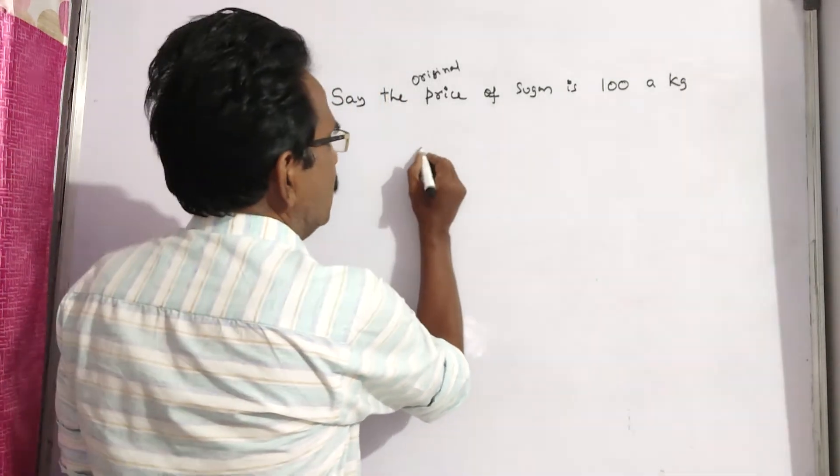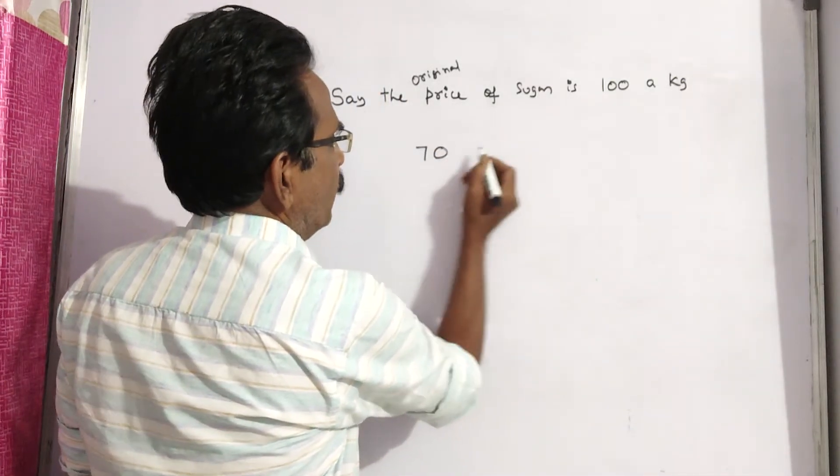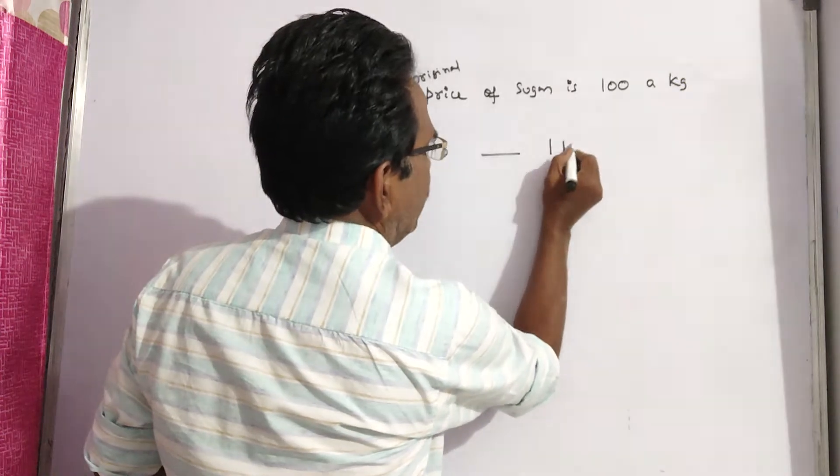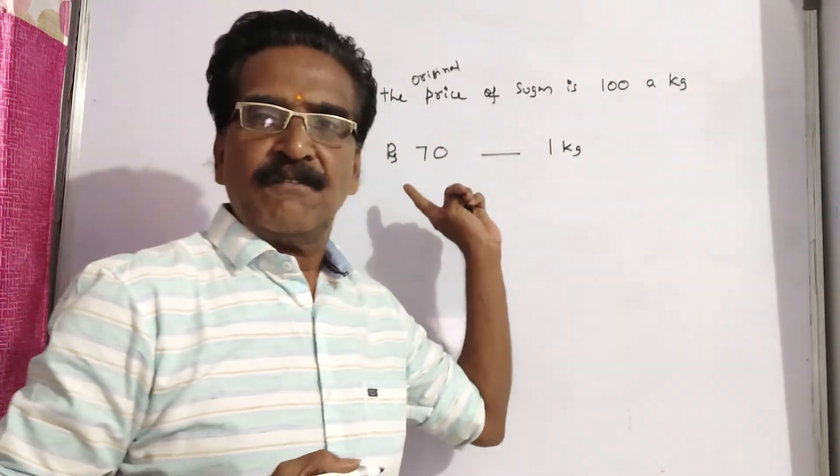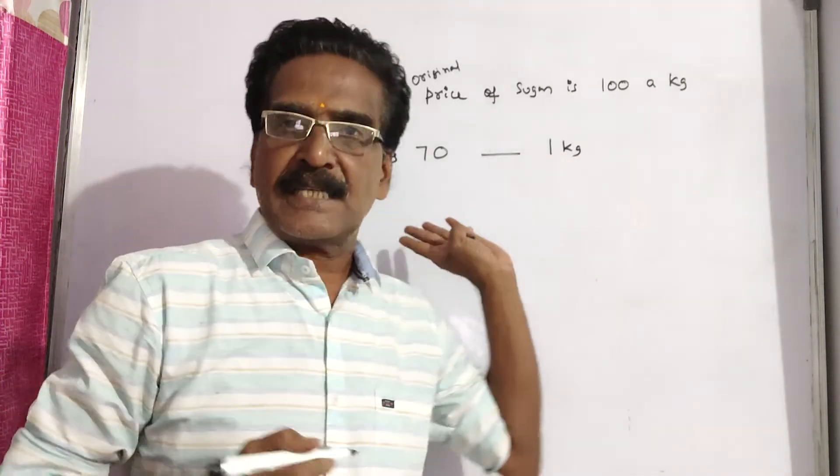So that means now you are getting one kg of sugar for rupees 70 only.